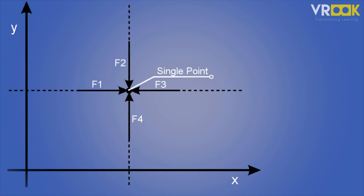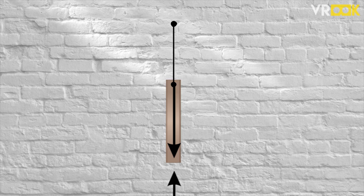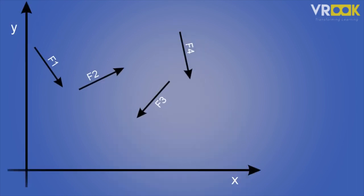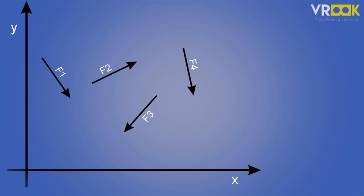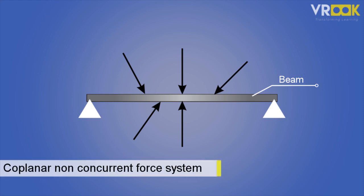Exactly like what we see here. For example, consider a thin metal rod hanging on the wall. The weight of the rod will be acting downwards and there will be an equal and opposite reaction to that weight acting upwards. But if we have a case where all the forces act in a single plane but do not meet at a single point — like what we see on the beam here — then it is called a coplanar non-concurrent force system.